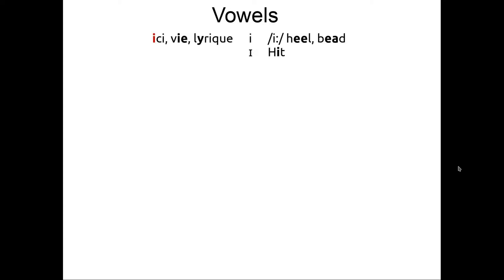The first vowel is the sound I. It can be written with the letter I or the letter Y. For example, we have ici, vie, lyrique. It's easy because in English you have the sound I, but that's always long. It's the I sound in heel or bead. On the left I have a sound in French words, and on the right I have the closest equivalent in English. And in IPA, the two dots mean longer time.